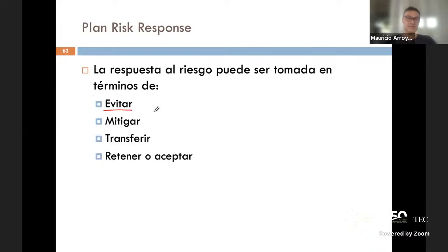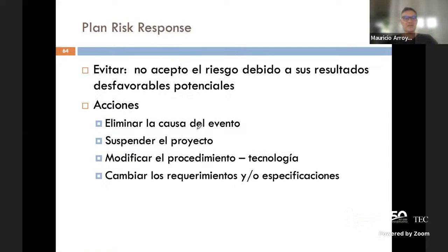Los cuatro tipos de respuesta son: evitar el riesgo, mitigar el evento de riesgo, transferirlo, o retener/aceptar el riesgo. Veamos qué es cada uno de ellos.